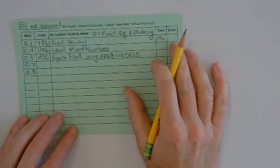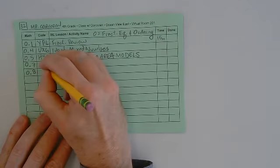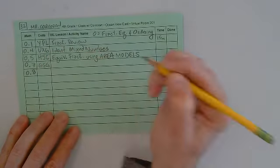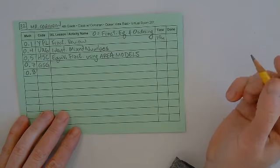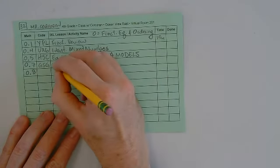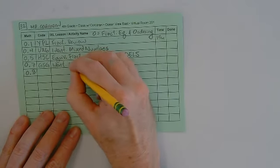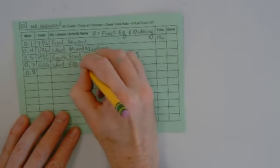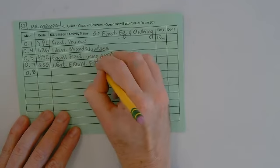So down to O7, that was GSG. And that one is identify equivalent fractions. So identify equivalent fractions.